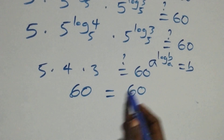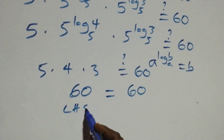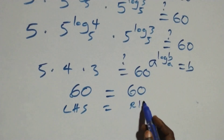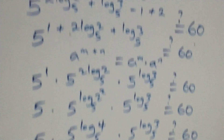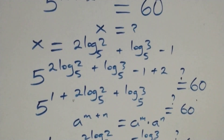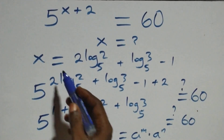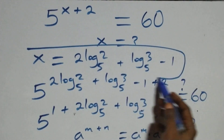The left hand side equals the right hand side. Therefore, we conclude that x equals to 2 log₅2 plus log₅3 minus 1 satisfies this given problem.